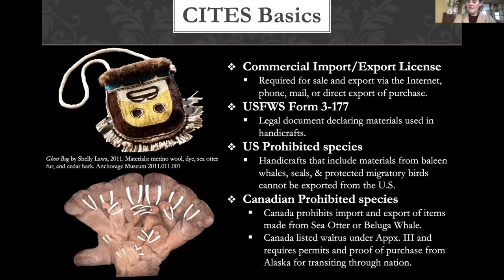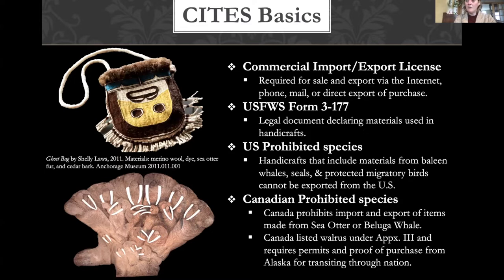To take native arts across international borders — for example, traveling through Canada — you need U.S. Fish and Wildlife Service Form 3-177. This legal document declares the materials used in the handicrafts and certifies they were harvested sustainably within the state of Alaska. All species utilized in each individual piece must be declared — whether Chilkat is made from merino wool or mountain goat wool, whether it has sea otter fur, deer toes, and so on.